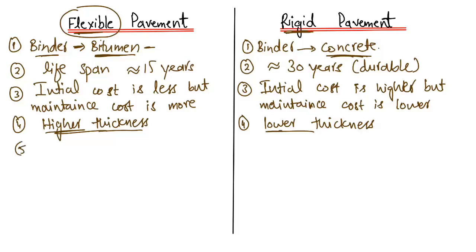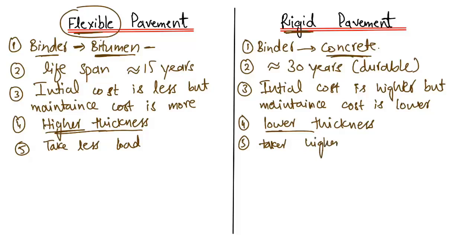The fifth difference is load-bearing capacity. Flexible pavement is supposed to take less load because it uses less stiff material. Rigid or concrete pavement can take a much higher load because concrete is a very stiff material. Generally, both can carry significant loads in tons, but rigid pavement takes higher load compared to flexible pavement.